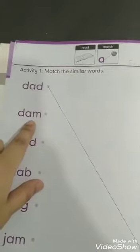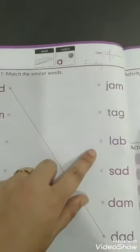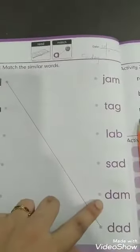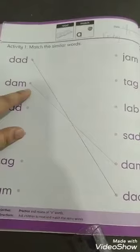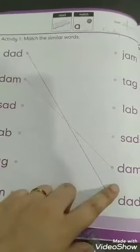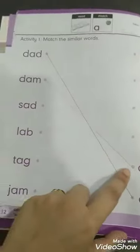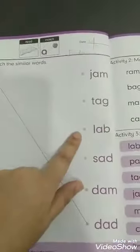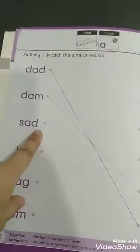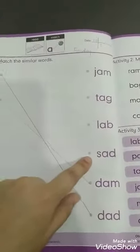Second word is the am dam. Dam ko hum second column me find karenge. Where is dam? Yes here is dam. Dam ko hum margin ke saath match kareenge. Third word is ad sad. Where is sad? Yes here is sad.